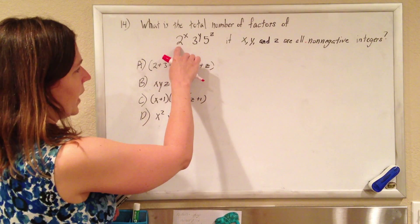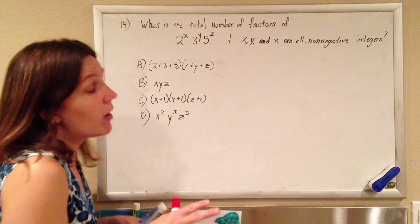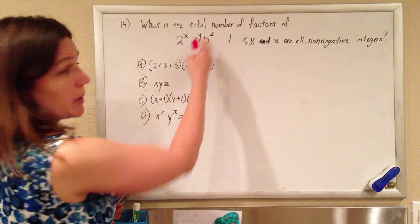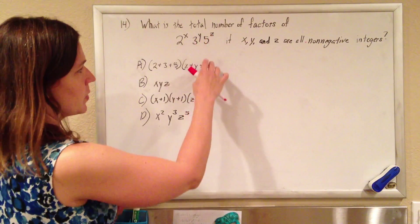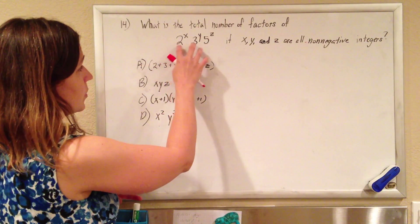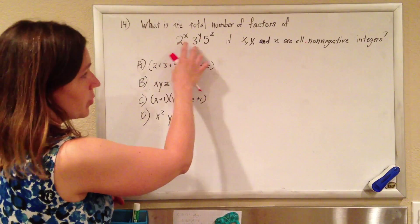So we can divide it by 2 x times, or maybe not at all. We can divide it by 3 y times, or maybe not at all, and same thing with 5. Or we can do combos of those as well. We could do 2 with a 3 and a 5, or 2 with a 3 and no 5.